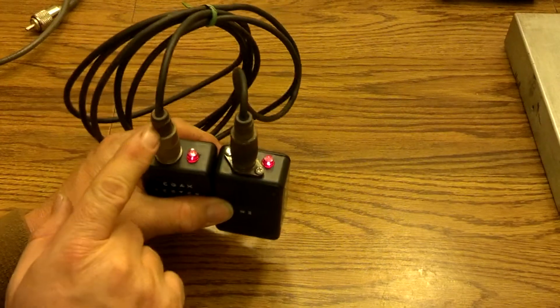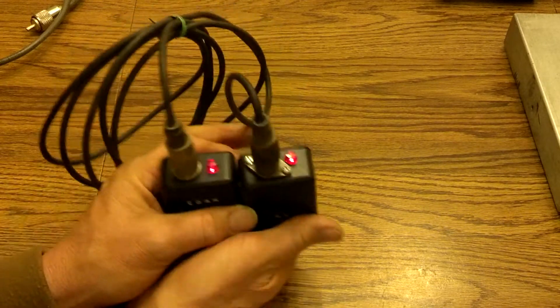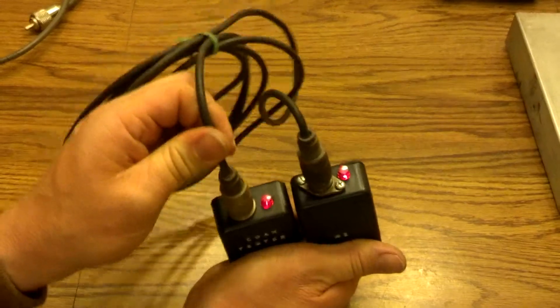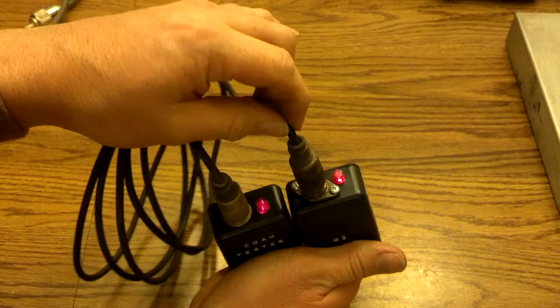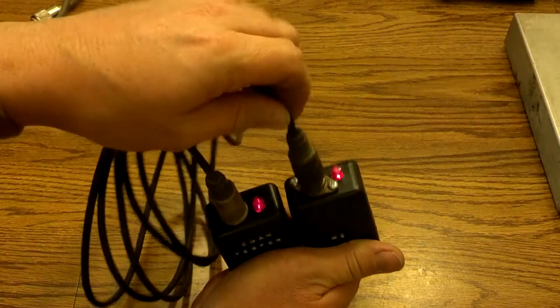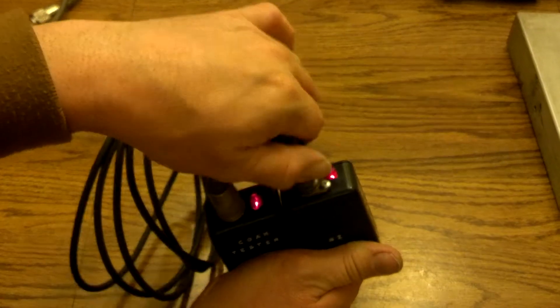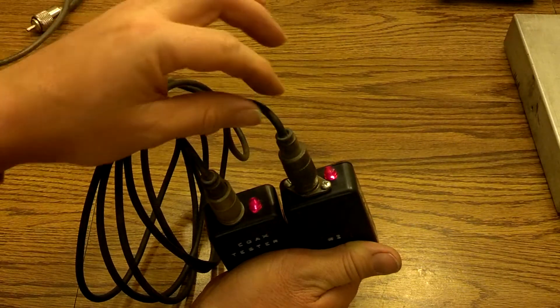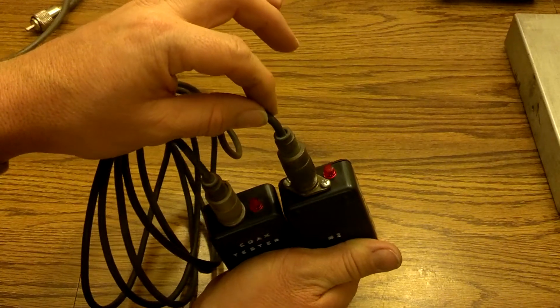Now example, if you had bad shield or something in there and you was to check this one first, nothing, it's good. Another good one. But if it had a bad shield in it, say example, you went to check it, uh oh, look at that.